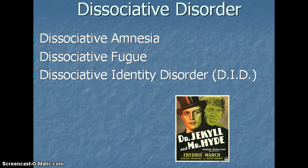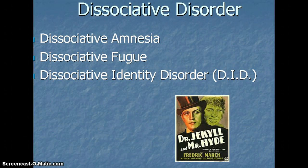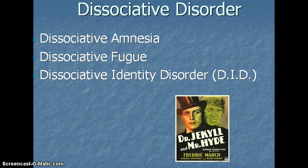The next one, and probably the most well-known type, is dissociative identity disorder — also known as multiple personality disorder. This is when a person has two or more distinctly different personalities. Probably the most popular and reliable explanation is that a person experiences some sort of traumatic event and instead of dealing with it, they say 'it didn't happen to me, it happened to someone else,' and their mind creates an alter personality to help them cope.